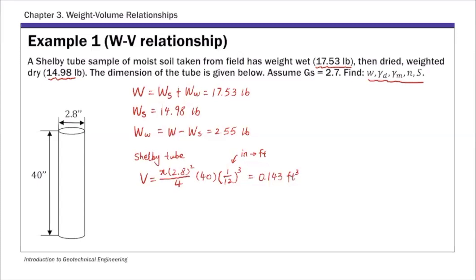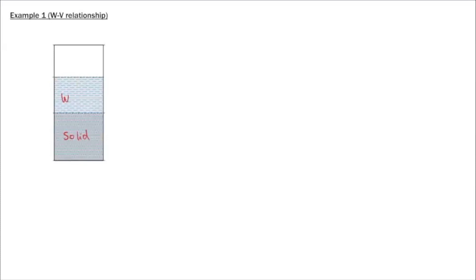So we know the total weight, weight of solids, weight of water, and the total volume. To solve weight-volume relationship problems, we draw a phase diagram. This is a moist soil, so we have three phases: solids, water, and air. The phase diagram has two sides — the weight side in pounds, and the volume side in cubic feet. We complete the phase diagram before calculating all the ratios.